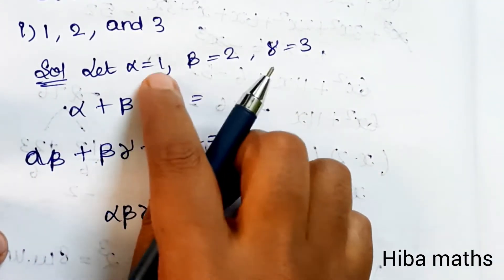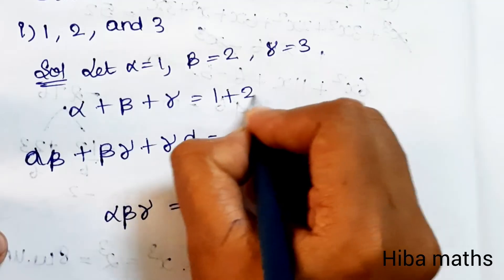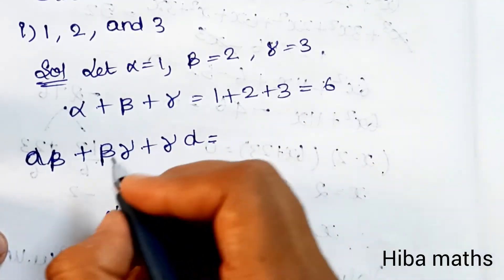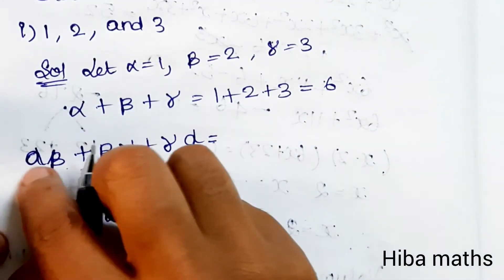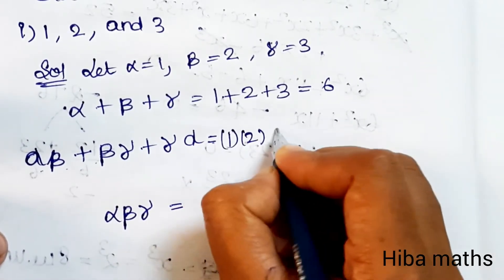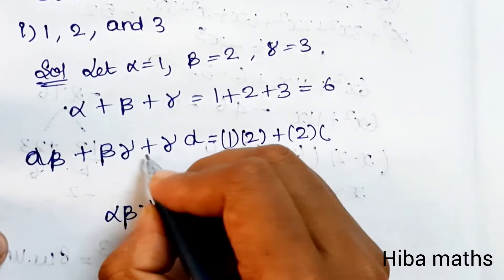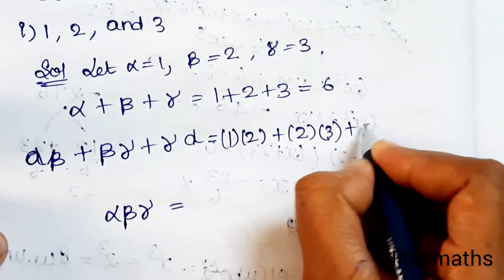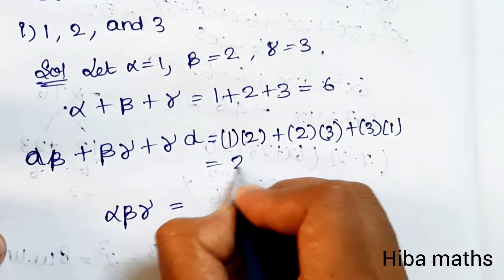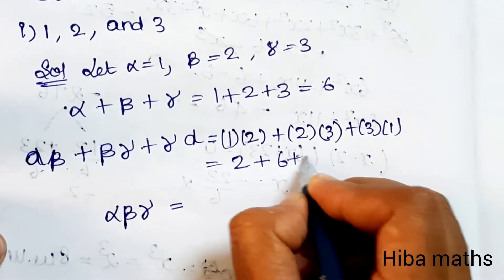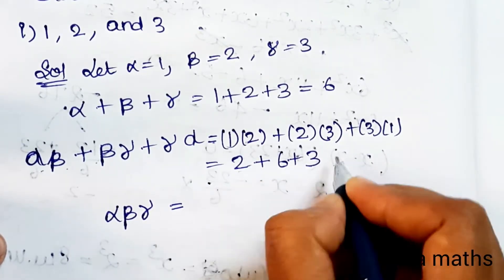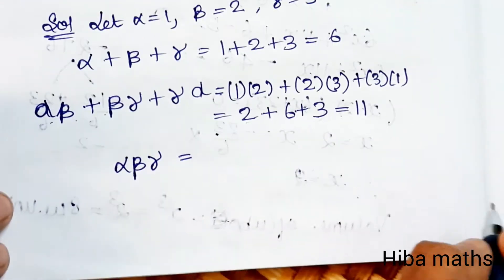Alpha plus beta plus gamma equals 1 plus 2 plus 3, which is equal to 6. Alpha·beta plus beta·gamma plus gamma·alpha equals 1×2 plus 2×3 plus 3×1, which is 2 plus 6 plus 3, equals 11.